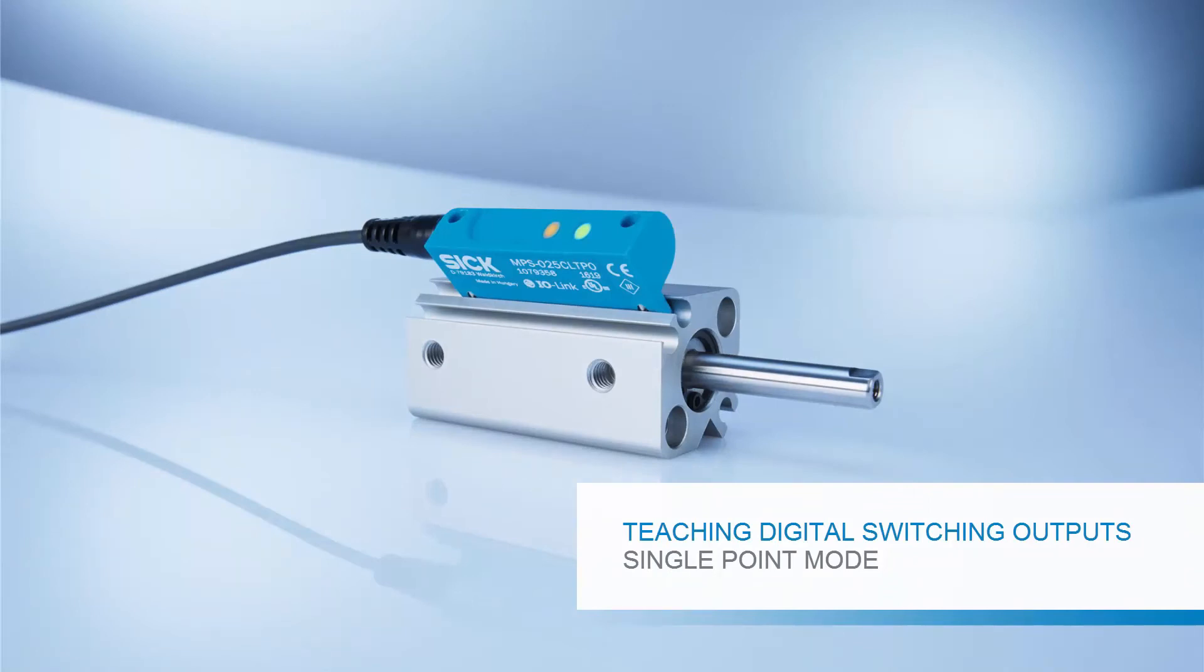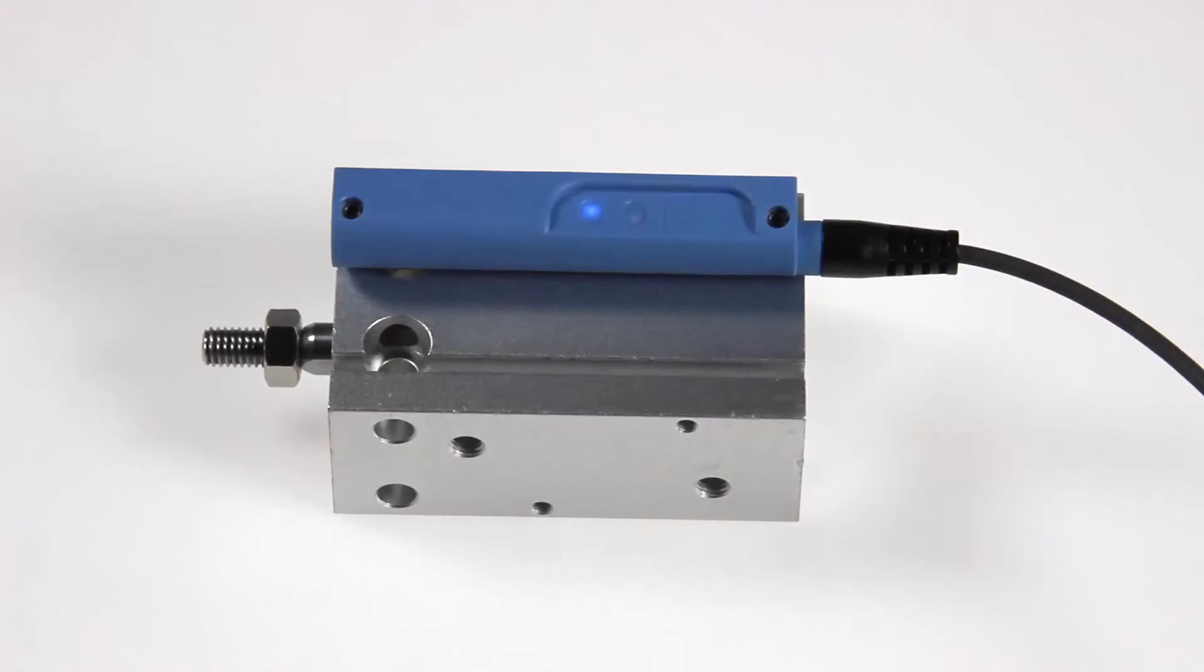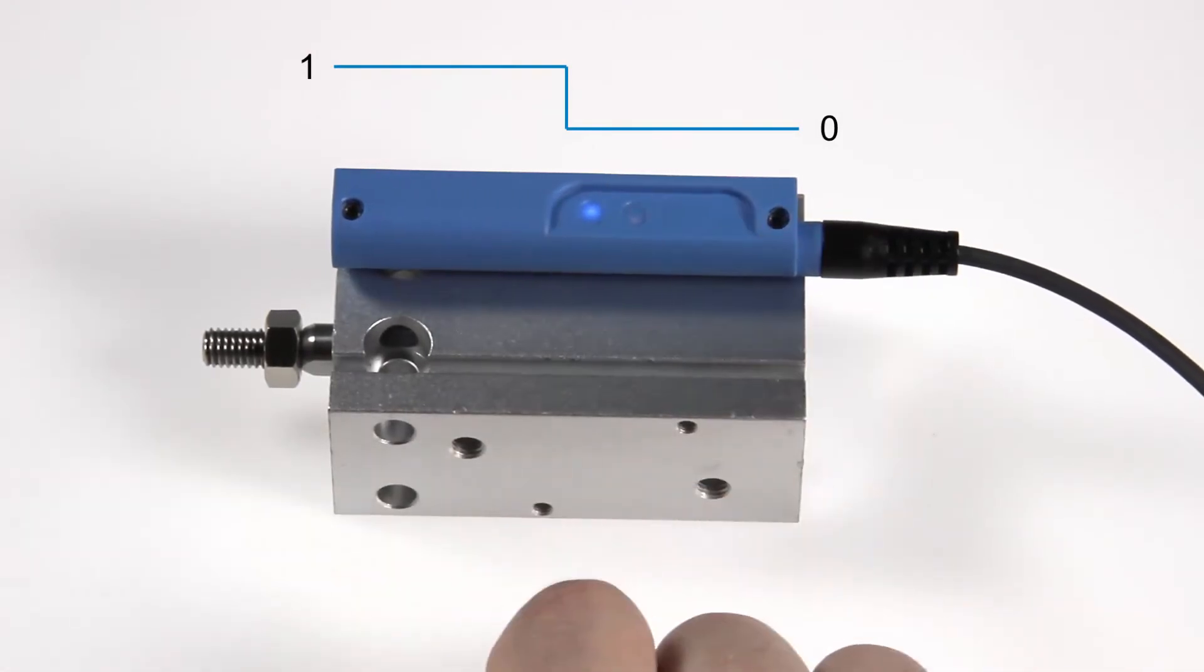Teaching digital switching outputs. Single point mode. The MPSC offers three different switching output behaviors that can be set via the keypad. The first option is the single point mode. The single point mode defines a switching point. From this point to the cable end of the sensor, the switching output is low and to the opposite direction, the switching output is active.